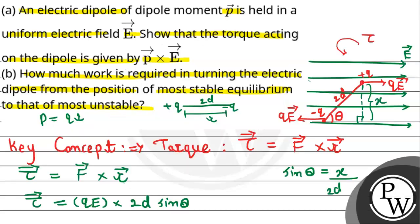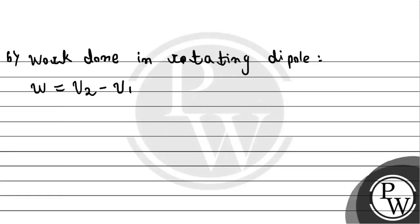Now, have a look at the second part, in which we have to calculate the work done while turning the electric dipole from stable equilibrium to unstable state. For that, we use the work done formula. We remember that the work done in rotating a dipole can be given as the change in potential energy, which is U2 minus U1.